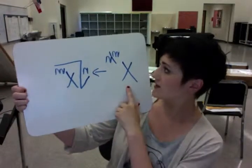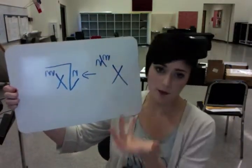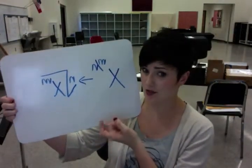you're going to have something that looks like this. You'll have x to your m over n power, whatever that fraction is, whatever numbers those are.